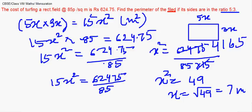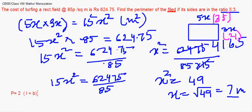Now we find the perimeter. With x = 7, the length is 5x = 5 × 7 = 35 meters, and the width is 3x = 3 × 7 = 21 meters. Perimeter = 2(length + breadth) = 2(35 + 21) = 2 × 56 = 112 meters. Let us take a few more questions on the next screen.